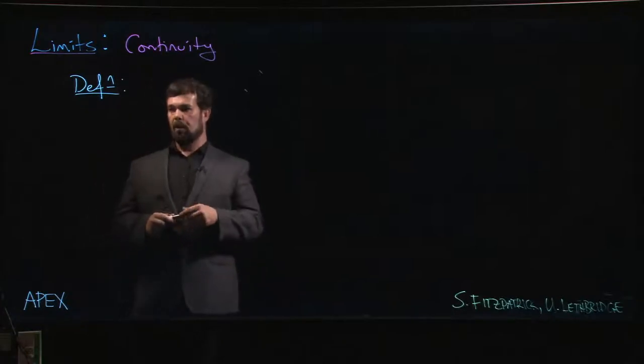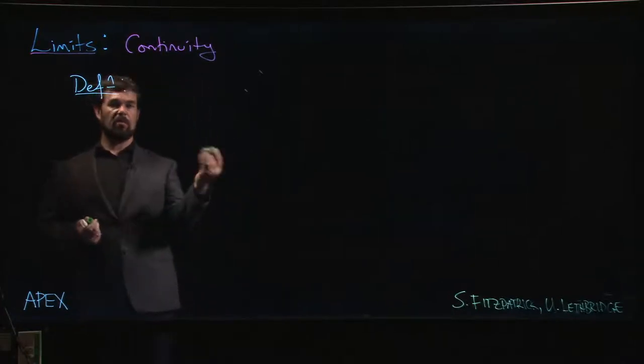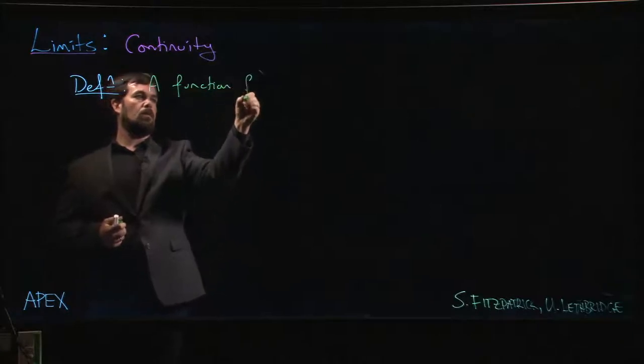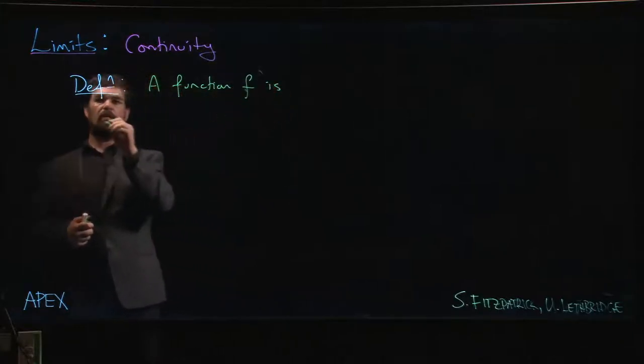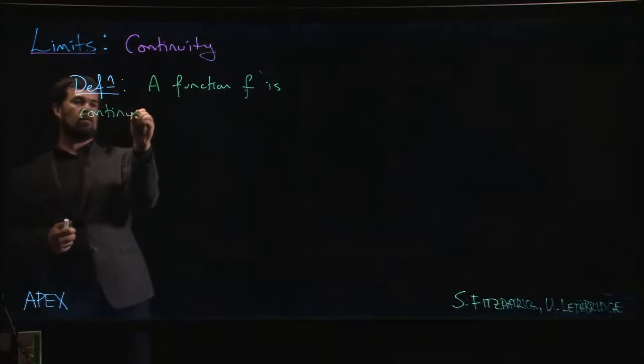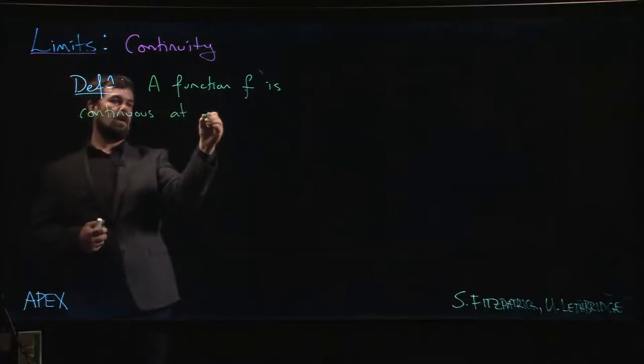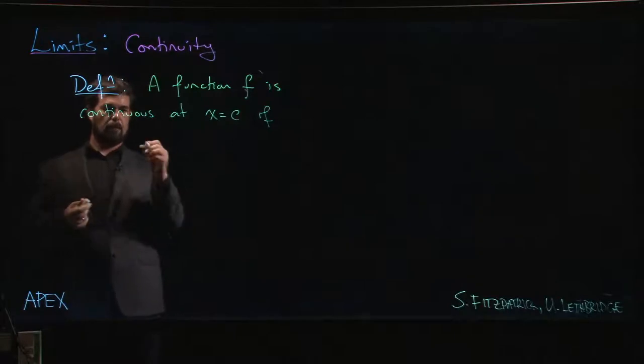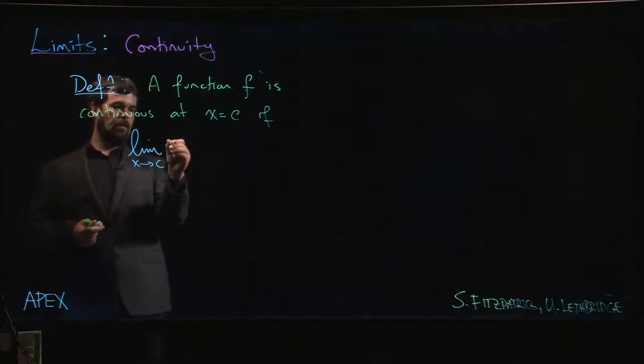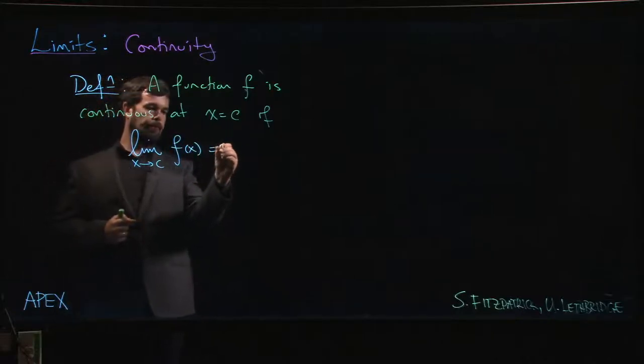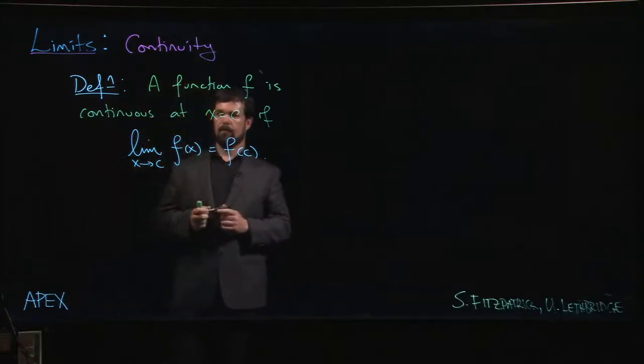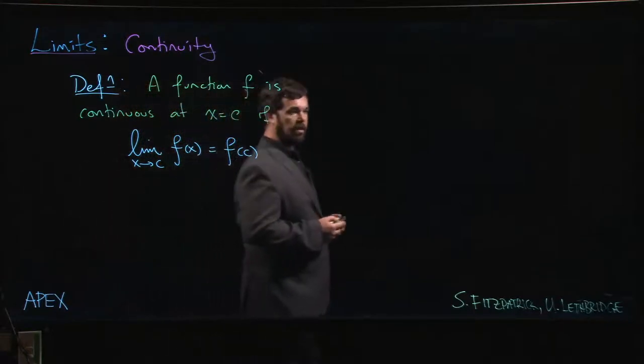But the basic part of the definition is: we start with what it means to be continuous at a point. So a function f is continuous at some point, say x equals c, if the limit as x approaches c of f of x equals f of c.